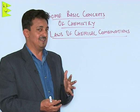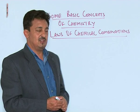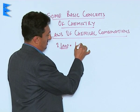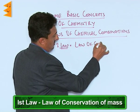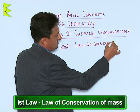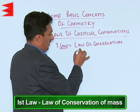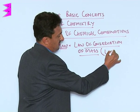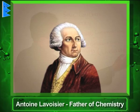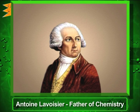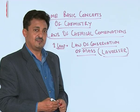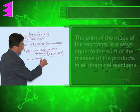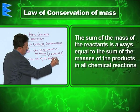There are five laws under the heading of laws of chemical combinations. The first law is called the law of conservation of mass. It was given by Lavoisier in the 18th century, who is also regarded as the father of chemistry.